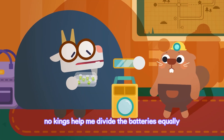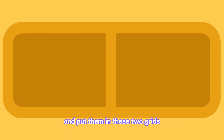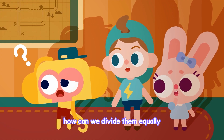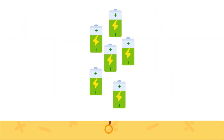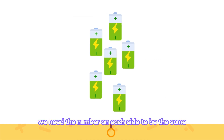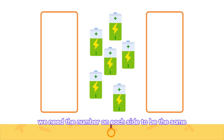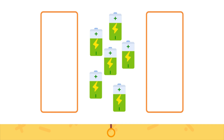Oh, kids! Help me divide the batteries equally and put them in these two grids! How can we divide them equally? I know how! Watch this! Do you know how to divide these six batteries equally? We need the number on each side to be the same.